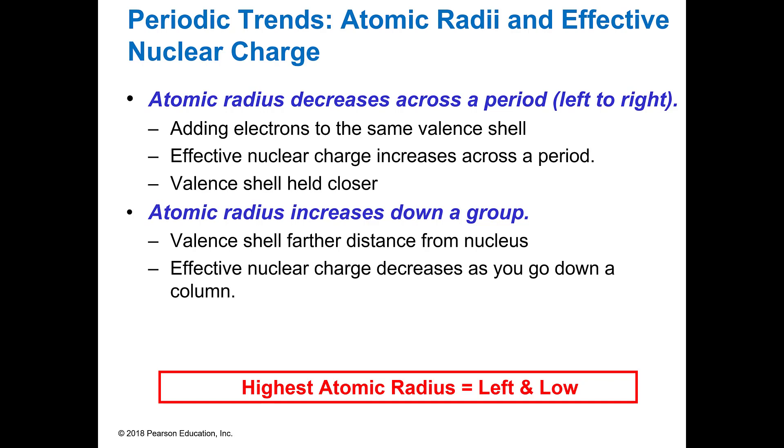The next we'll look at is atomic radius. Atomic radius is a left and low. Because you're adding electrons to the valence shell, the valence shell is held closer, then the atomic radius decreases. If you're adding electrons to it, then it's going to get bigger. So atomic radius is a left and low.